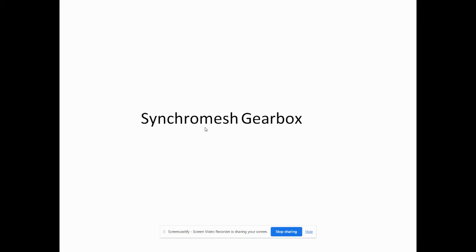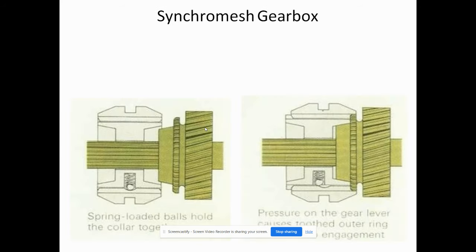Now the working of the synchro mesh gearbox. The output shaft is always rotating because it is positively connected to the wheels. The lay shaft is connected to the engine but rotates freely when the clutch is disengaged. Because the gears are meshed all the time, the synchro brings the lay shaft to the right speed of the gear to be meshed.